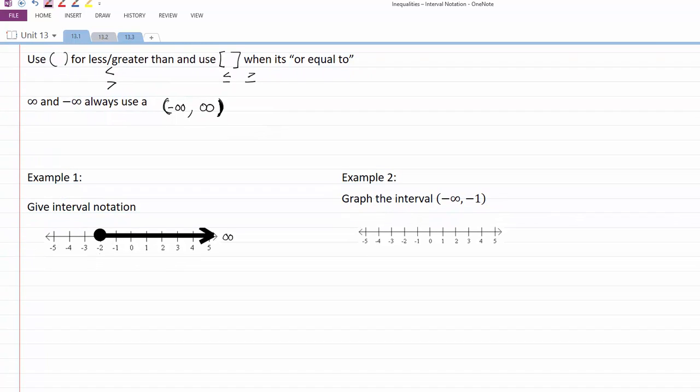In example one, we need to write the interval notation for this graph. We are going from negative two to infinity on the right, put a comma in between those. Our closed dot means we use a bracket, and our infinity gets a parenthesis.